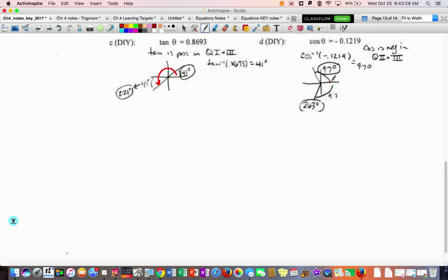So one way to do this is just to say if it's 97 this direction, it'll also be 97 from this direction. So you could just say, okay, what's 360 minus 97, which is a little bit different than what we teach with reference angle, but it will work. I'm going to show you another method.